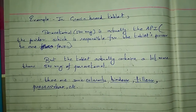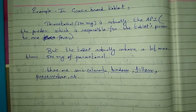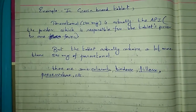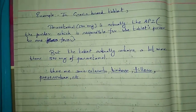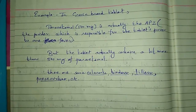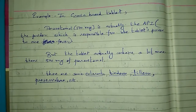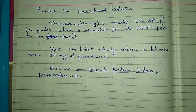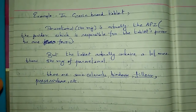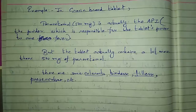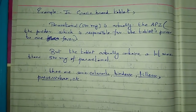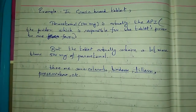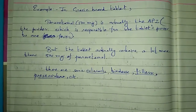However, the tablet actually contains a lot more than just 500mg of paracetamol. The additional components include colorants, binders, fillers, preservatives, etc. These are the excipients. So now you should have a clear understanding of what API is.